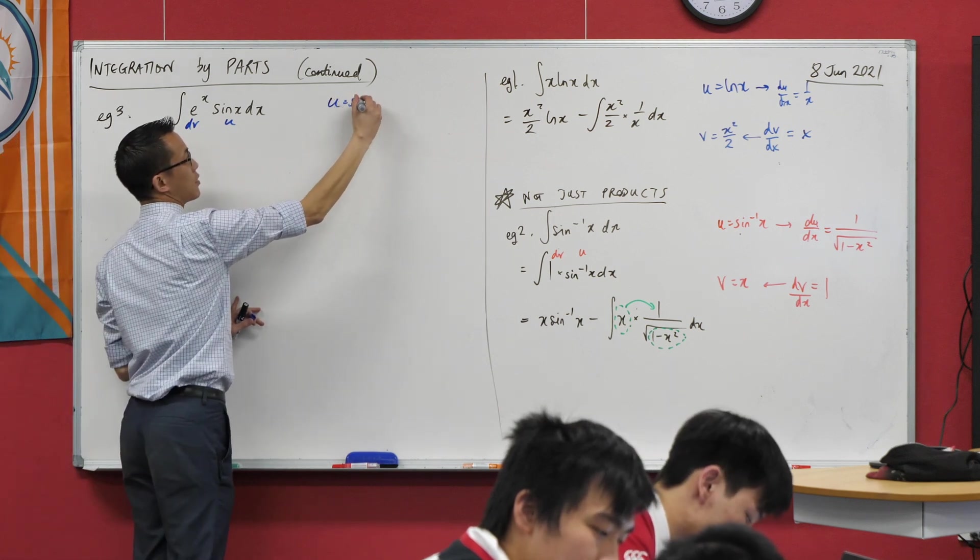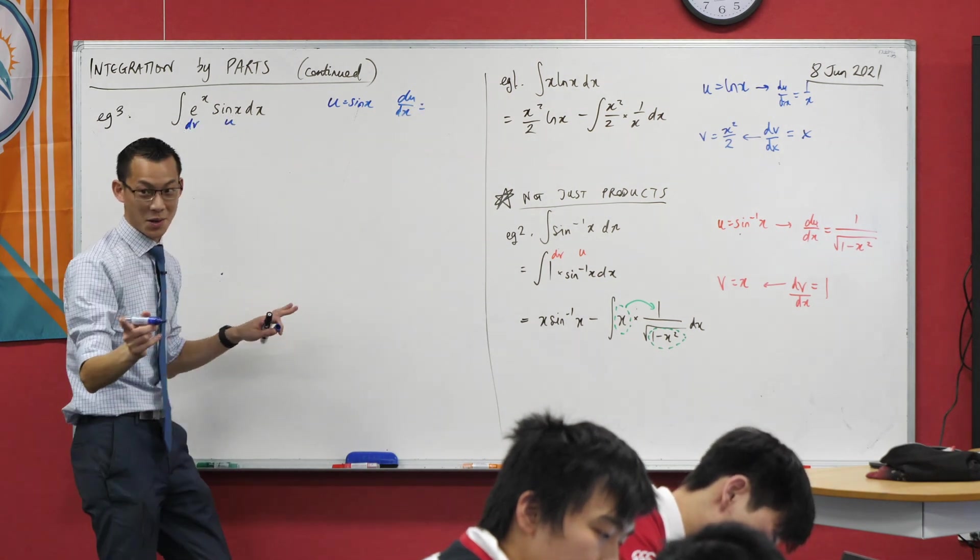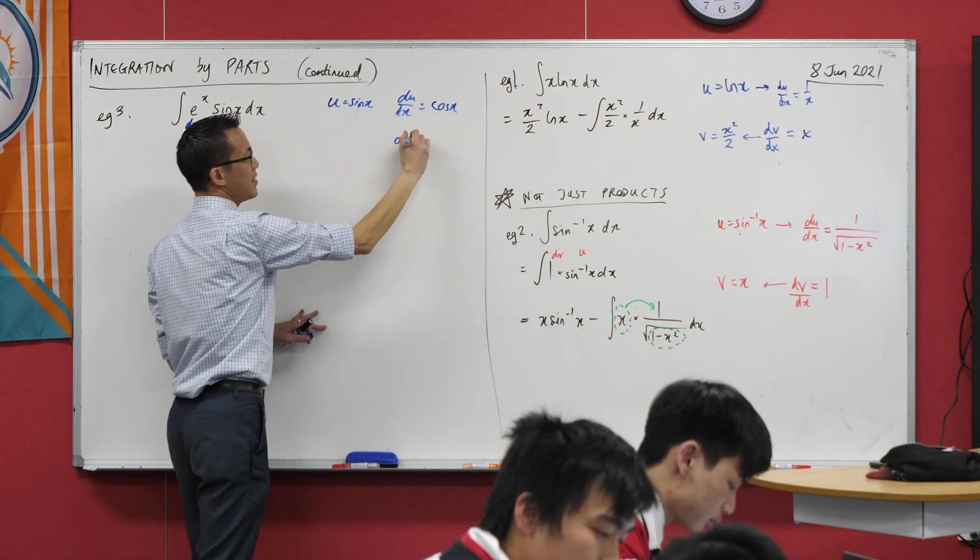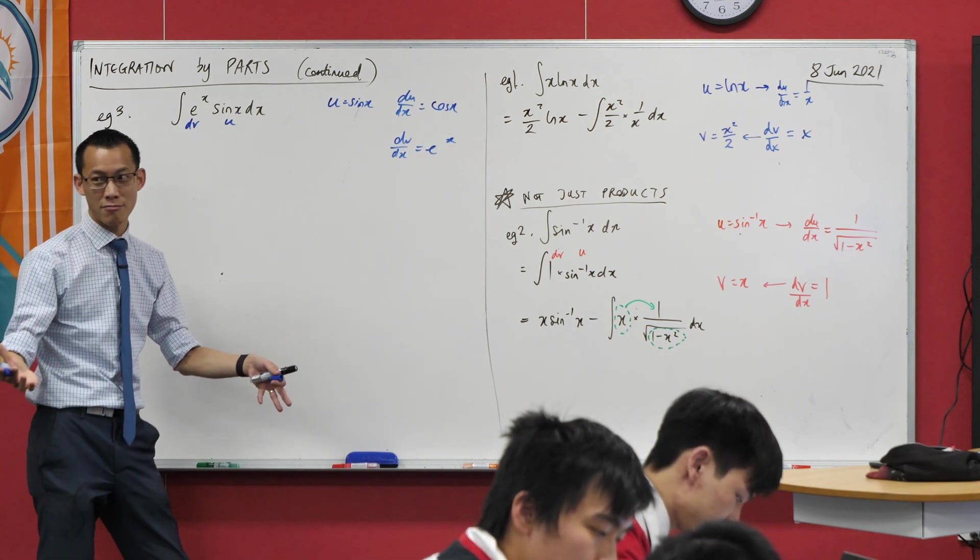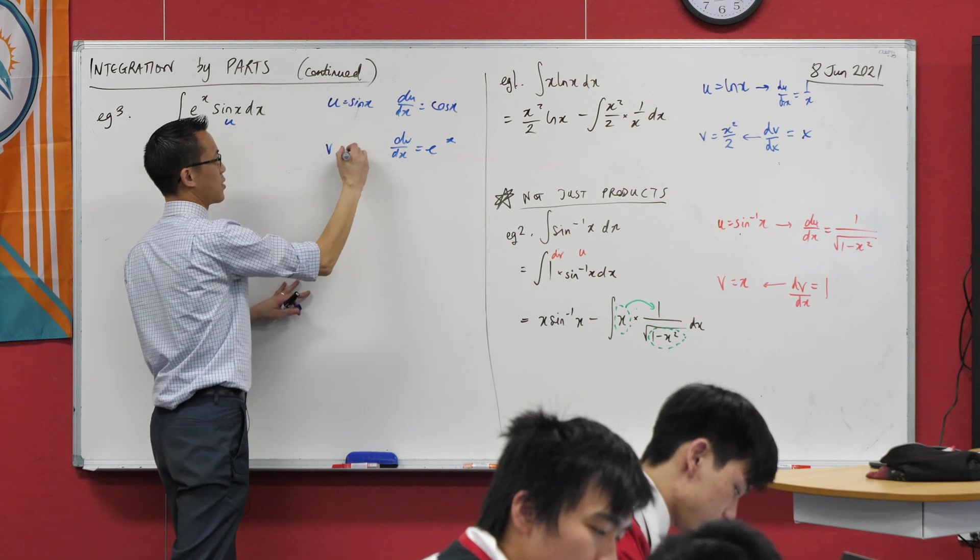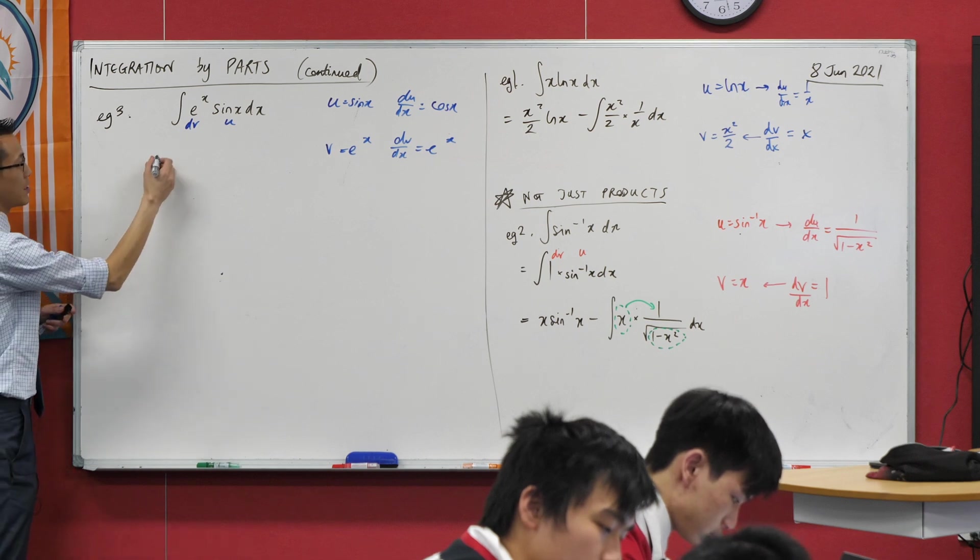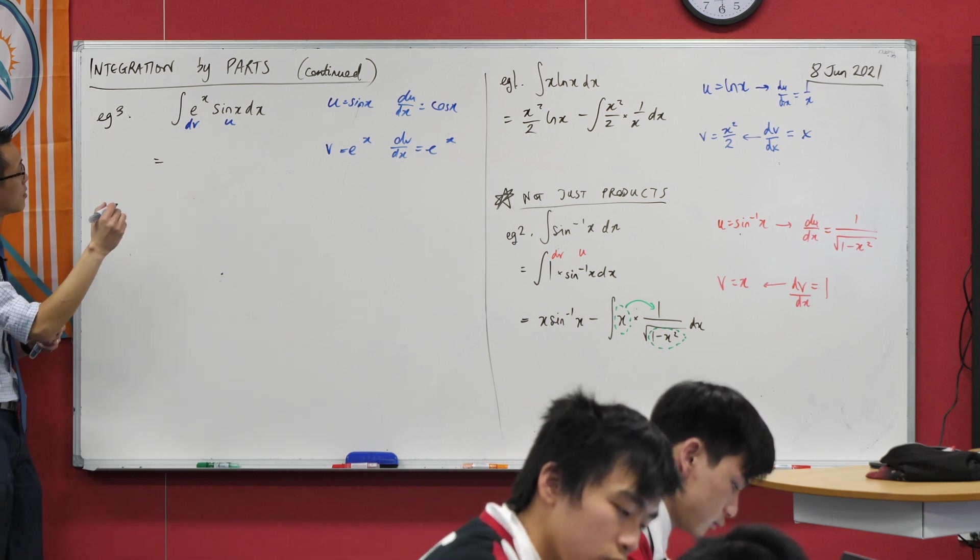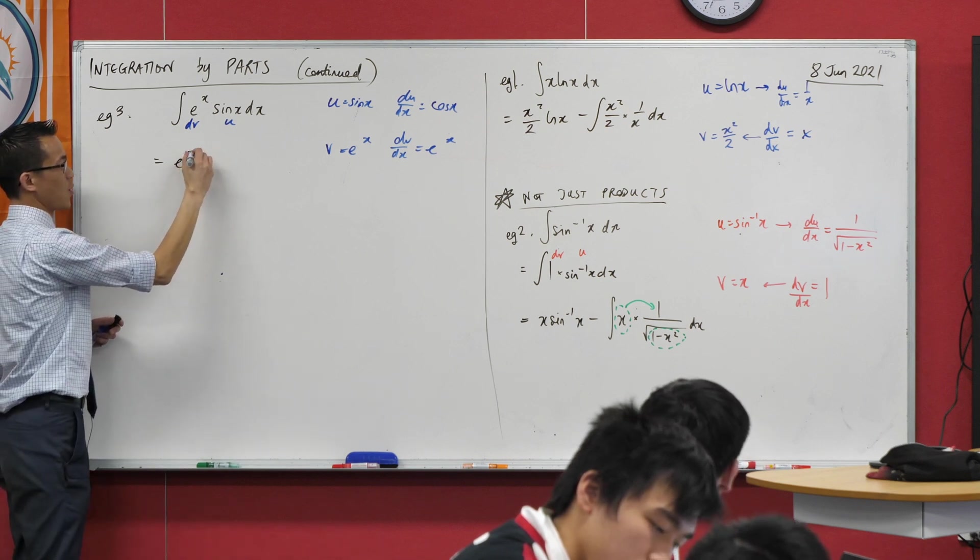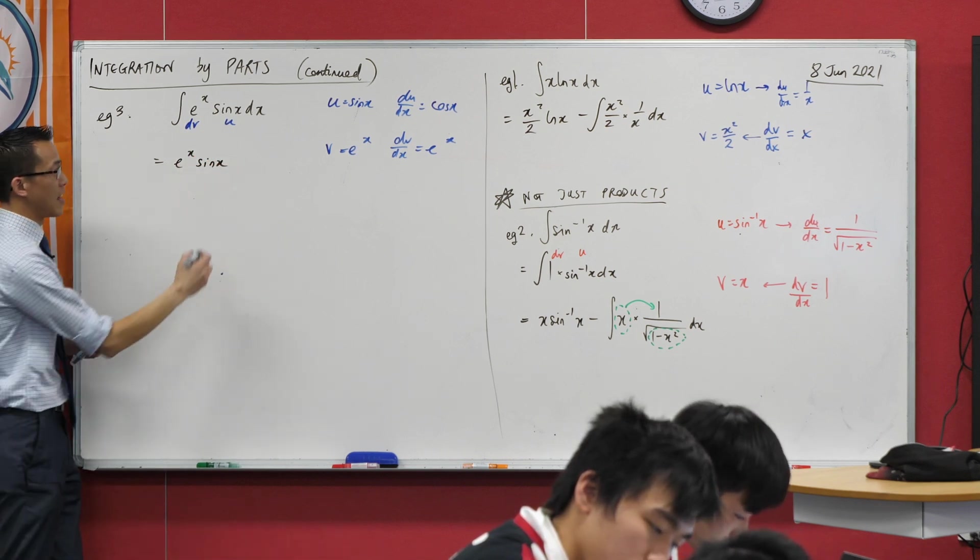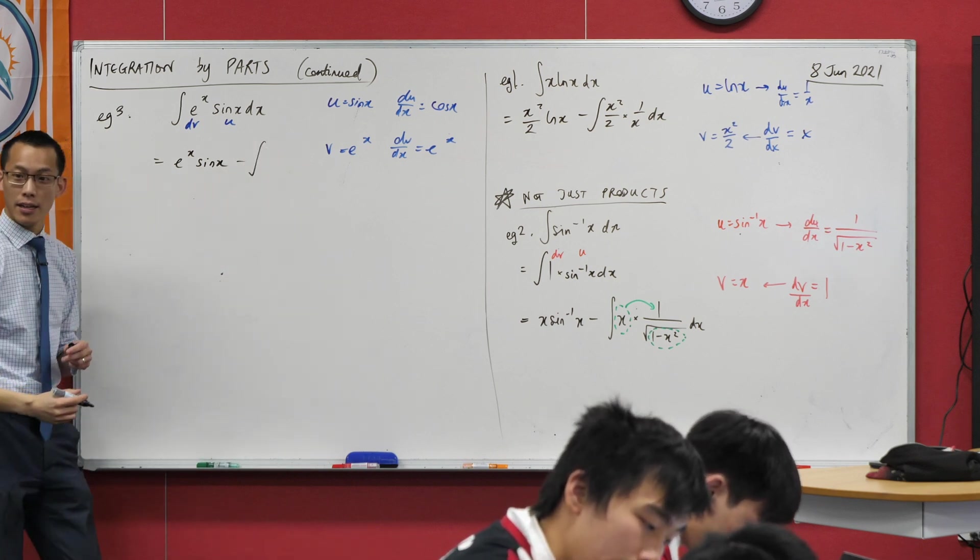So if I get u being sine x, someone tell me what du is. It's cos x. Thank you. If I made e to the x dV, then v is going to be e to the x. Fantastic. So things are all marching along just nicely. You then start to say, well, okay, I'm going to say that equals to, okay, I've got my uv. So there's uv, like so. And then I'm going to subtract, I've got enough space just, I think, the integral of v du.